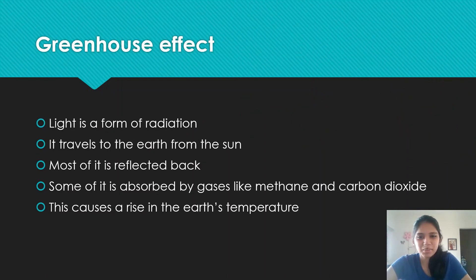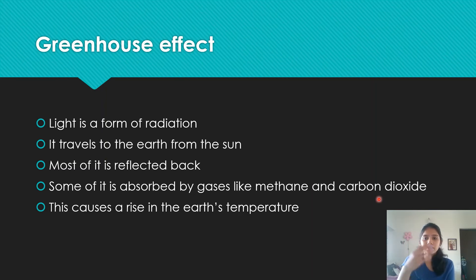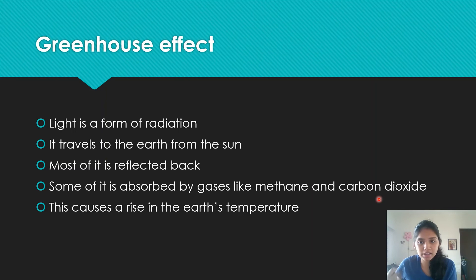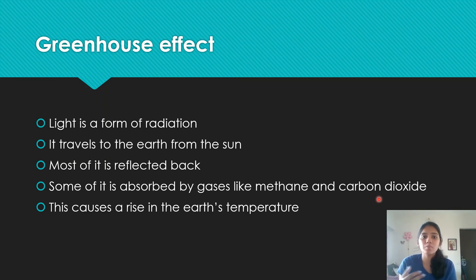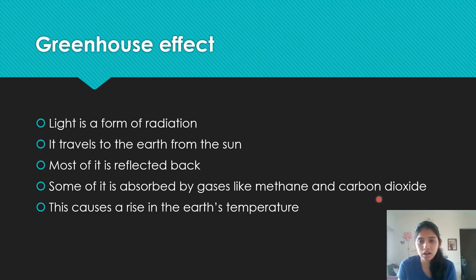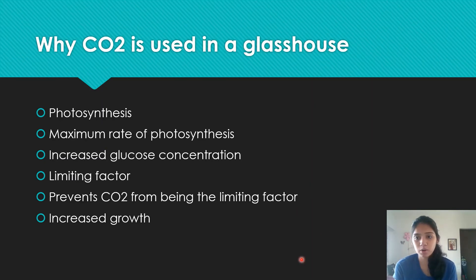The greenhouse effect: light from the sun travels to Earth in wavelengths. Most is reflected back into space, but some is absorbed by the atmosphere due to greenhouse gases like CO₂ and methane, which absorb heat and cause Earth's temperature to rise. Over the last century, temperatures have been rising due to increased release of these gases. It's called the greenhouse effect because in a greenhouse, CO₂ is used to absorb heat and maintain an optimum temperature. The result is global warming.